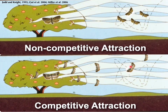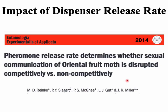With codling moth, by contrast, females are calling and hand-applied dispensers are releasing pheromone. The males follow the plume toward the dispensers and do not get overwhelmed — we call this competitive attraction.